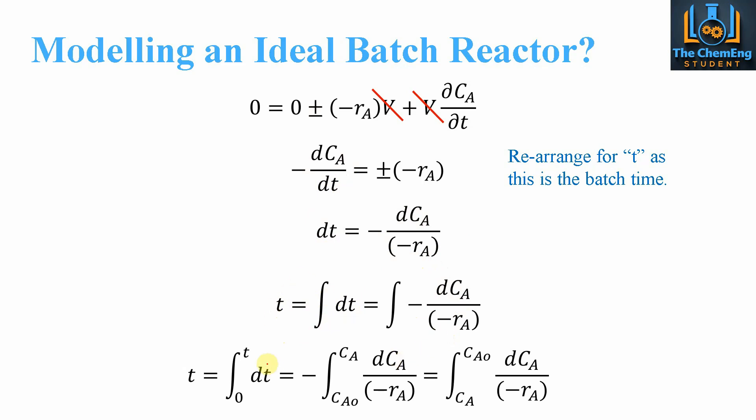If we integrate with the limits of zero to t, initial time of zero to some final time t, then when time is at zero we have the initial concentration Ca0. The final concentration is achieved when we have the final batch time.